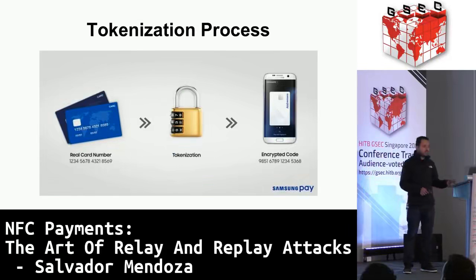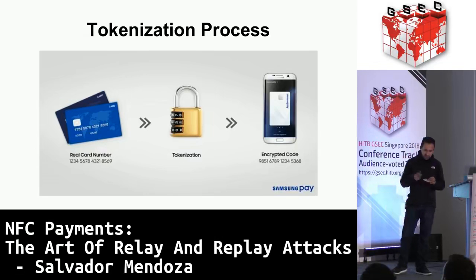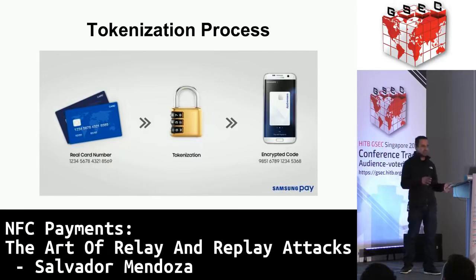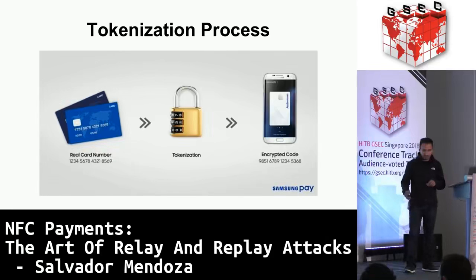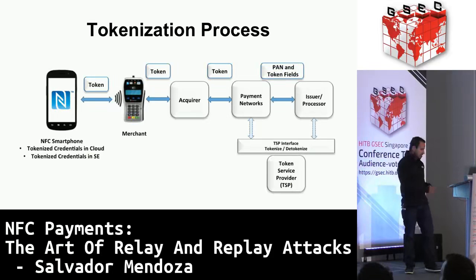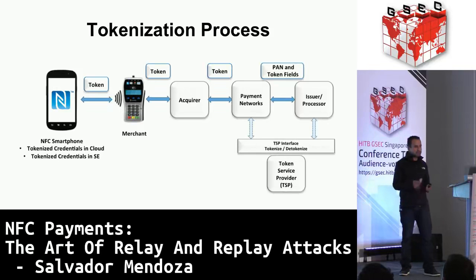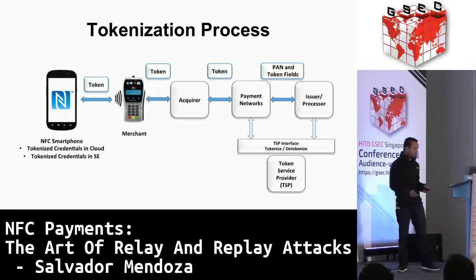One interesting thing about NFC is that they are implementing a tokenization process. Tokenization is when you have a physical card and you add it to Apple Pay, Samsung Pay, or Google Pay. When you add your physical card information to these technologies, they generate virtual credit cards. If someone intercepts this tokenized virtual credit card, they can use it only one time, so it's more secure. When you use Google Pay at a terminal, a third company called the token service provider validates the token, relates it to the physical card number, and sends it to the associated bank, which then decides whether to decline or accept the transaction.